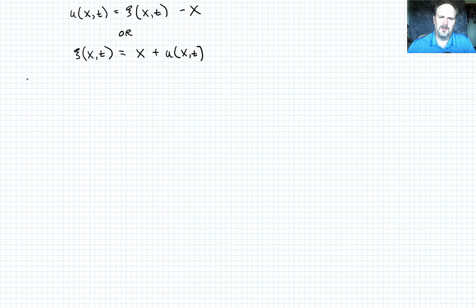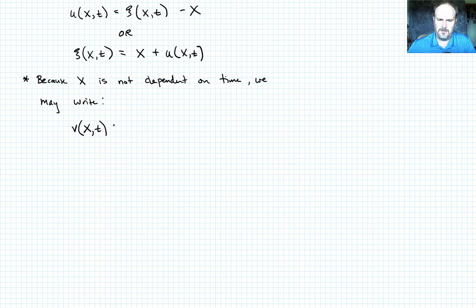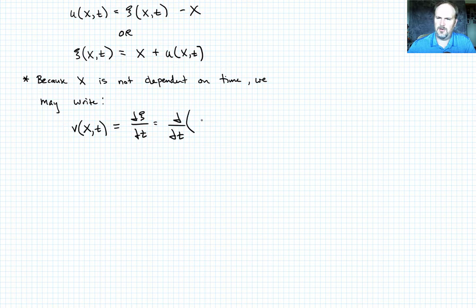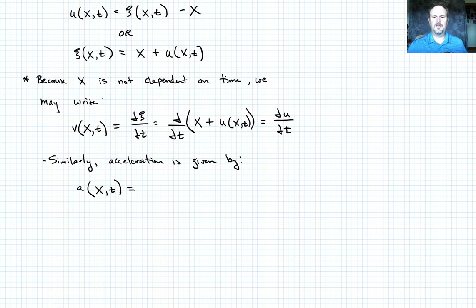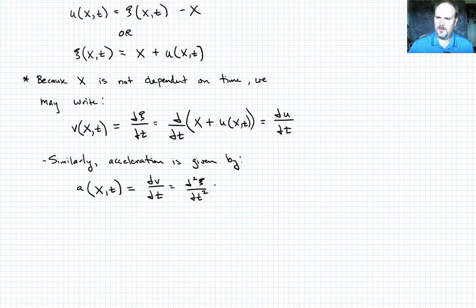Because X doesn't depend on time, we can write our velocities as follows. The velocity of point X at any given time equals the partial of its current configuration with respect to time, ∂C/∂T. Substituting our displacement relation in, that becomes ∂(X + U)/∂T. Since X has no time dependence, its partial is zero, and we're left with ∂U/∂T as our velocity. Similarly, acceleration is the partial of velocity with respect to time, giving ∂²C/∂T², or equivalently ∂²U/∂T².